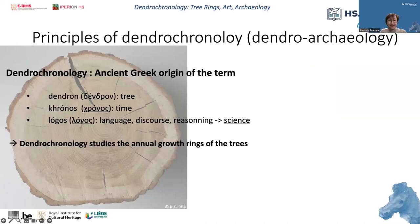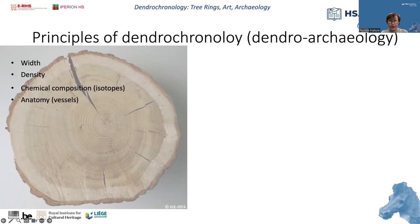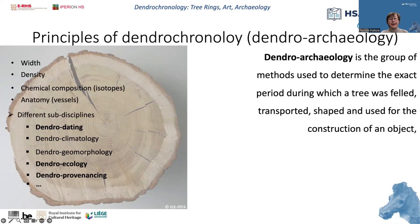To begin from the beginning: the word dendrochronology comes from the Greek terms dendron (tree), chronos (time), and logos (science). So dendrochronology is the discipline that studies the annual growth rings of trees. Different parameters can be studied in growth rings and used in different sub-disciplines.